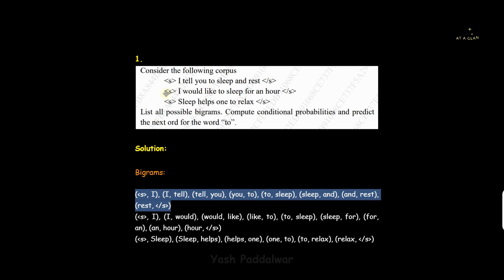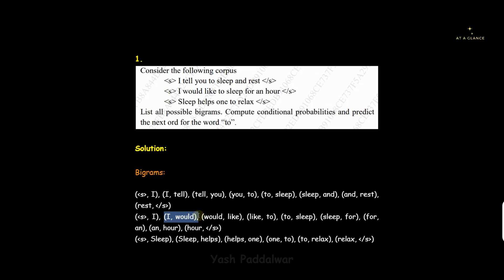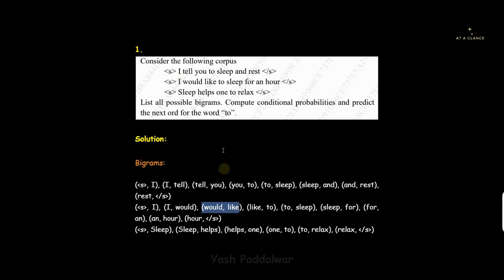Similarly we do it for the second sentence. The second sentence bigrams start with S-tag and 'I', then 'I would', then 'would like', and so on. Remember: even if a bigram is repeated from a previous sentence you still have to write it again. Make sure you do not omit any single pair. So we are done with bigrams now.